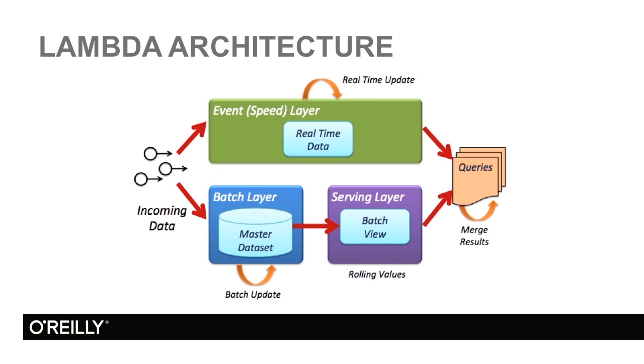Here is how Lambda architecture works. On the left-hand side, we have incoming data. This set of incoming data is going to be split. It is going to be fed to the upper part, which we call the event layer,